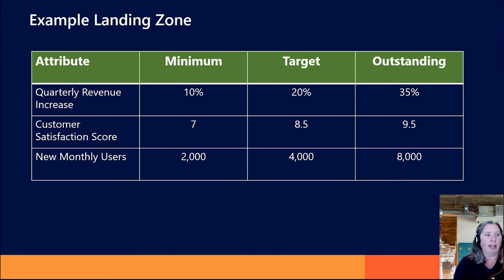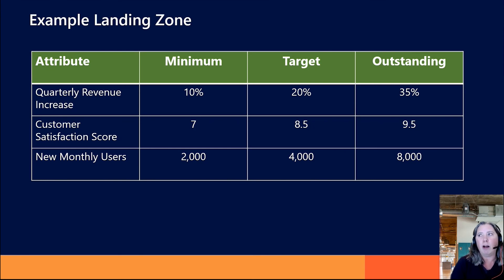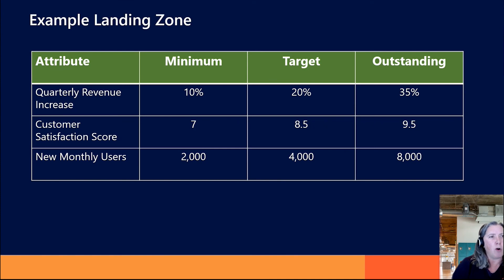Another example might be someone looking at increasing quarterly revenue, increasing customer satisfaction score, and adding new monthly users in support of that revenue goal. What does it mean for this particular project or release to be successful in each area? Honestly, I always find the quantification piece ends up not being incredibly hard once we know the value and we've talked through the scale and the meter. That tends to be the really hard part — how will we actually measure this, and how are we going to place ourselves on that scale?